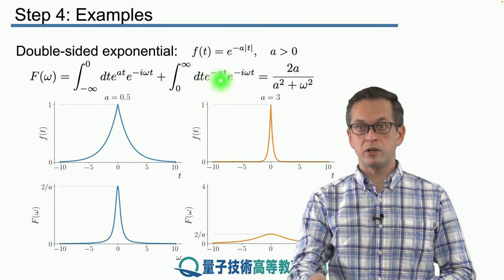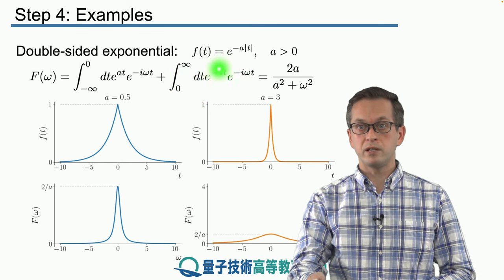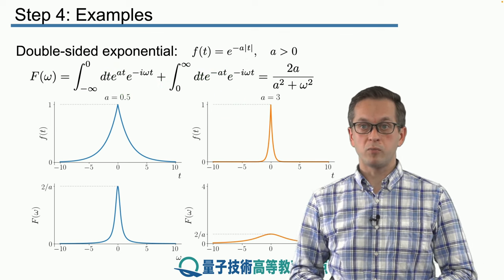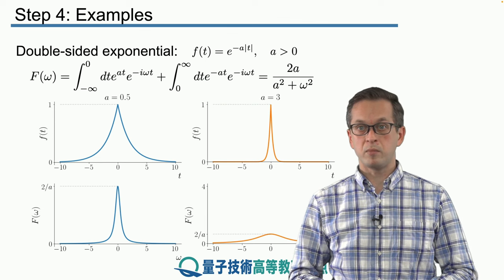And we are adding it to the integral from zero to infinity of e to the, this time minus at, because here all the times, all the t's are positive. Here they were negative. And again, multiplying by the same complex coefficient, e to the minus i omega t.